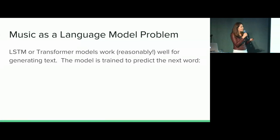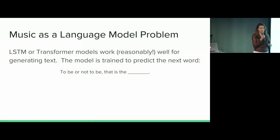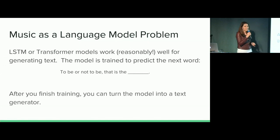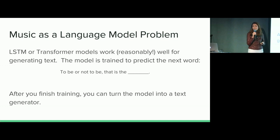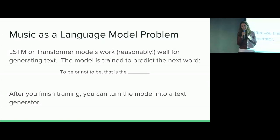The idea is that you take a neural network and you train it on a bunch of data. For language, you train it on a bunch of sentence fragments — you feed in the first set of words and then ask the model to predict the last word. You give the model tons of this training data. Once you have a model that's really good at this, you can turn it into a generator: as it spits out that last word, you feed that word back in, and it can continue predicting more and more, making it arbitrarily long.